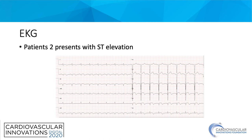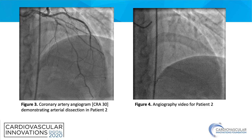This could be a potential sign to look out for with SCAD in female patients. For patient 2, we see figures 3 and 4 — the coronary artery angiogram and the angiography video. Patient 2's angiogram is a little more subtle, and we do see indications of an intimal flap after the large septal branch. We consider this to be a case of type 3 tubular type SCAD.